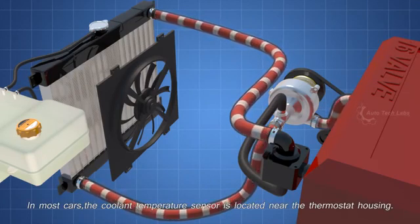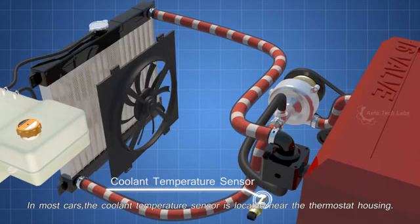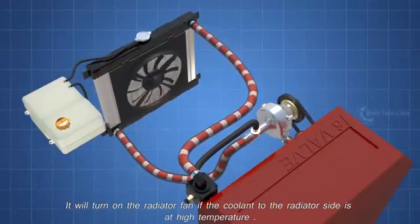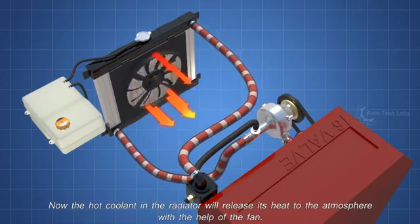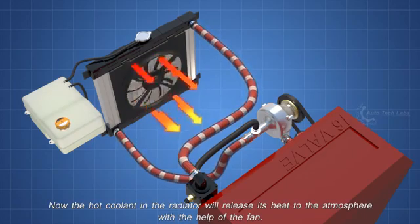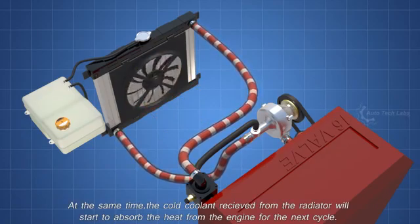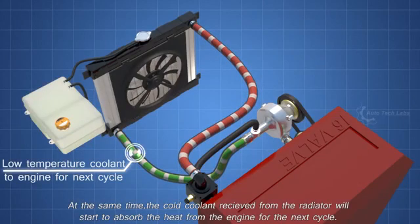In most cars, the coolant temperature sensor is located near the thermostat housing. It will turn on the radiator fan if the coolant to the radiator side is at high temperature. Now, the hot coolant in the radiator will release its heat to the atmosphere with the help of the fan. At the same time, the cold coolant received from the radiator will start to absorb the heat from the engine for the next cycle.